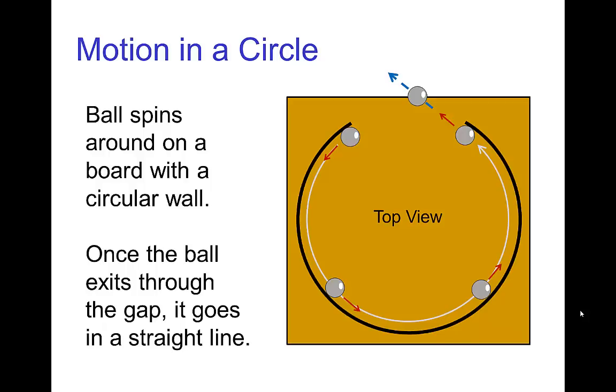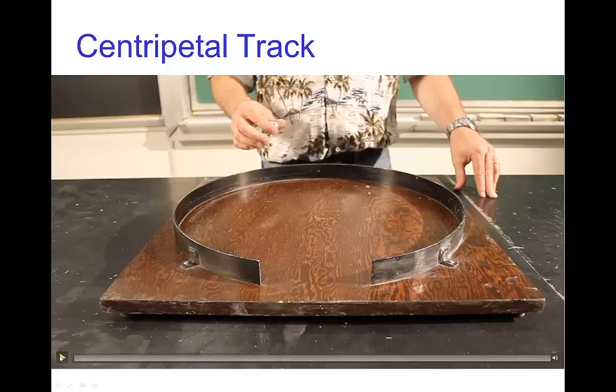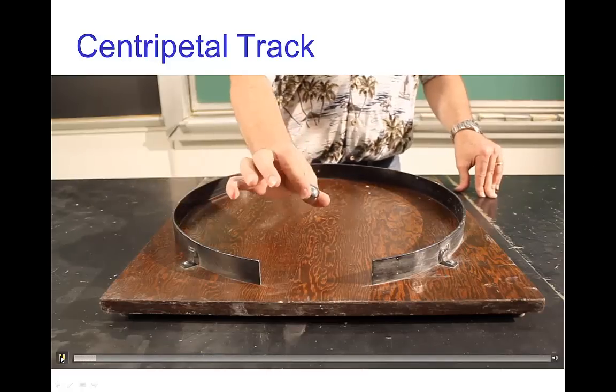We'll start with a simple example where the object is going to be a ball and the path of action is going to be a circle because it's on a flat surface, but there's a wall that is in the shape of the circle and the ball is going to go around the circle and then out the front.